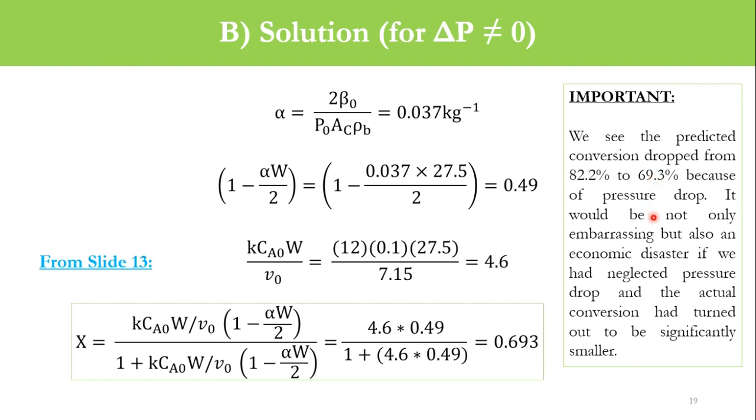We see the predicted conversion dropped from 82.2% to 69.3% because of pressure drop. It would not be only embarrassing but also an economical disaster if we had neglected pressure drop and the actual conversion turned out to be significantly smaller. You cannot